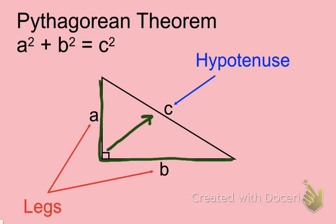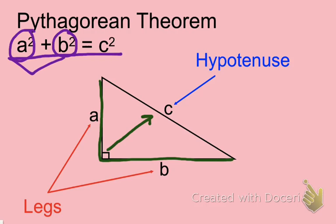The Pythagorean Theorem — that's our A squared plus B squared is equal to C squared — really states that the two legs squared, that's our A squared and our B squared, when they are added together, their sum will be equal to the hypotenuse squared. And that will always be true for any right triangle.